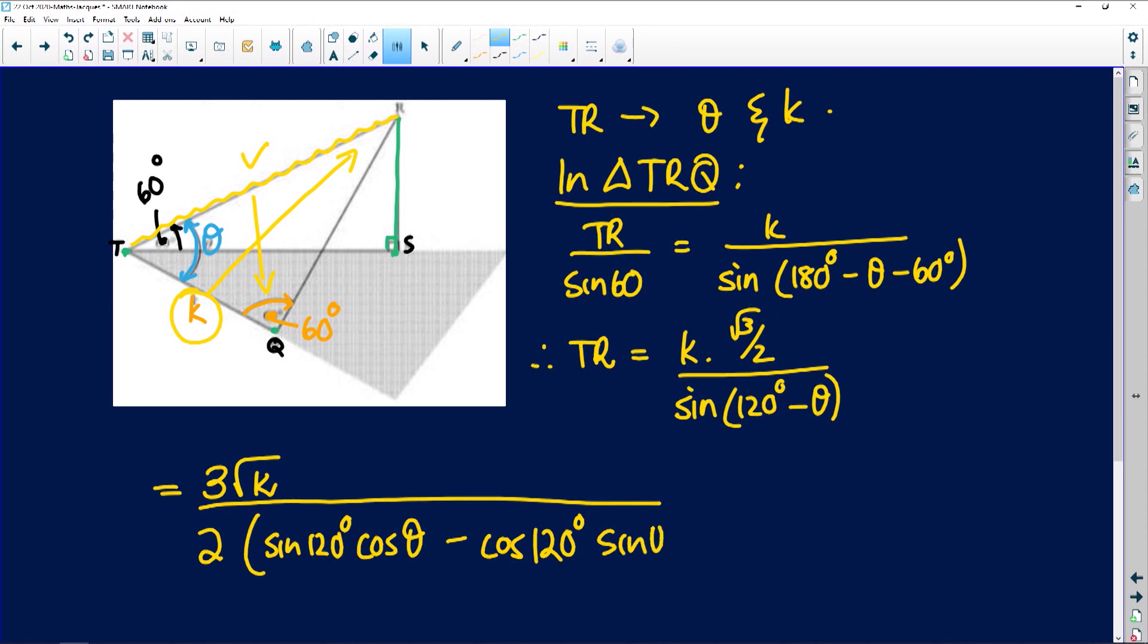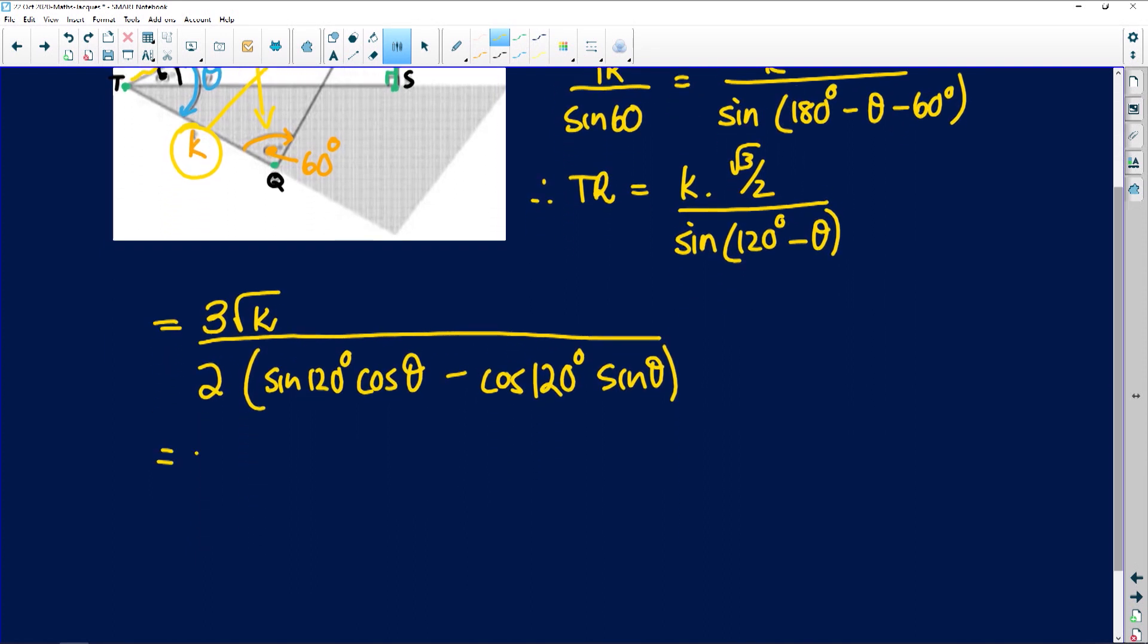Now let's work on that. That gives me root 3 k. Look at what I wrote here, I'm trying to do this far too fast. So this is root 3 times k as it was there, root 3 times k over twice. Now this is a second quadrant angle, it's 180 minus 60, and the sine of 60 is root 3 over 2, cosine theta minus...